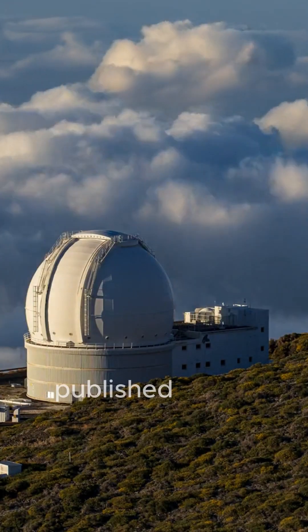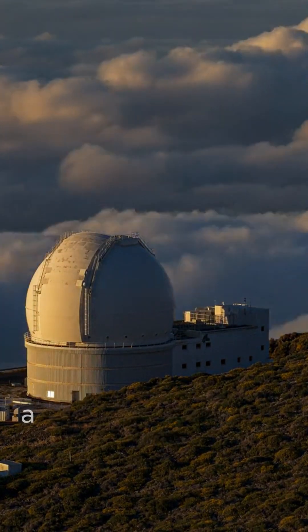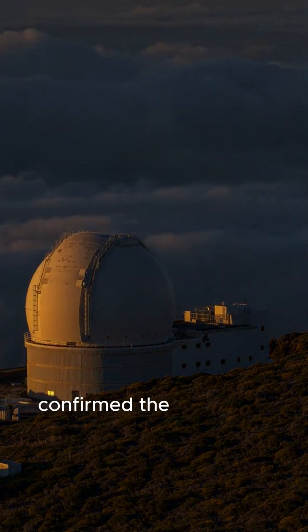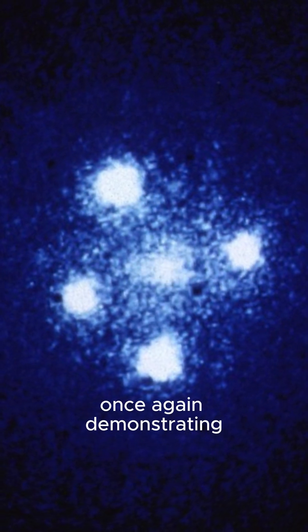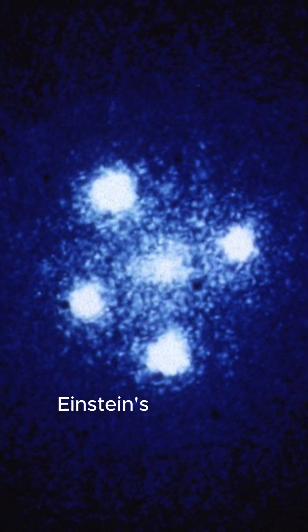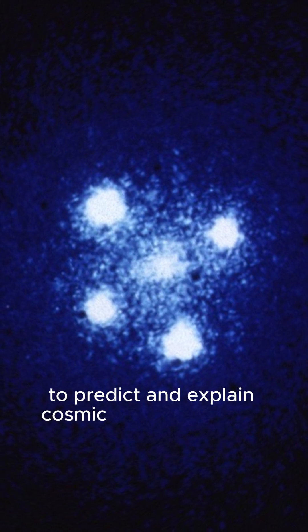In a recent study published in the Astrophysical Journal Letters, a team of researchers confirmed the existence of the Einstein Cross, once again demonstrating the remarkable ability of Albert Einstein's theory of relativity to predict and explain cosmic phenomena like this.